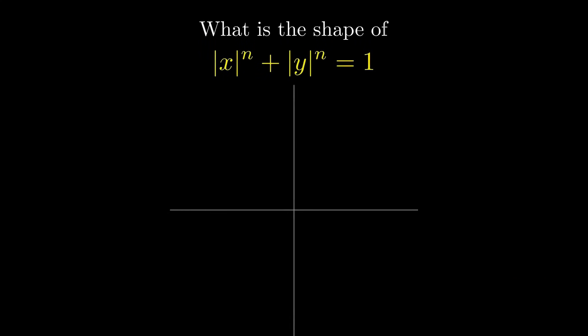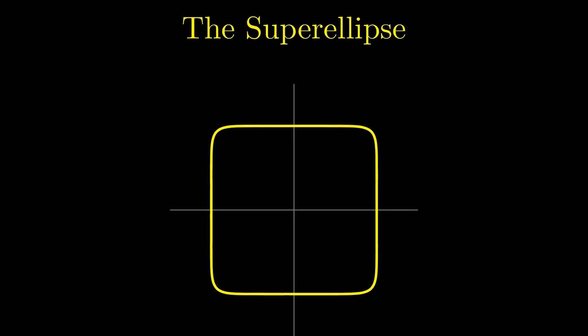What shape does this equation create? Absolute x to the power n plus absolute y to the power n equals 1. As the exponent changes, the entire shape changes with it. It shrinks into a star, grows into a circle, and eventually becomes almost a perfect square. This is the super ellipse. But how does the math actually work?